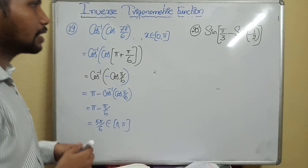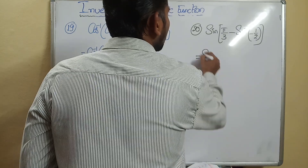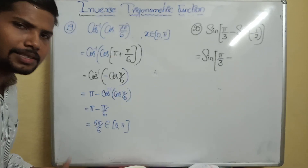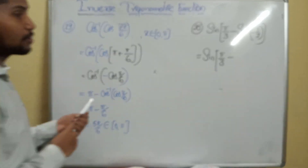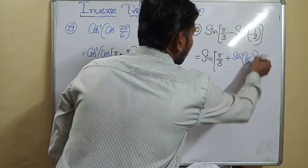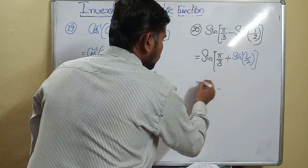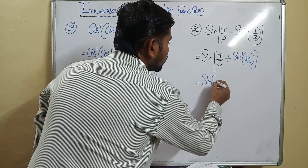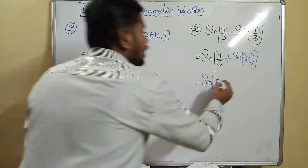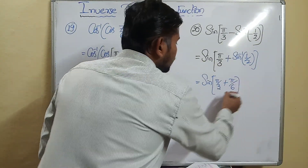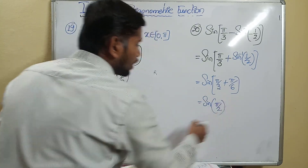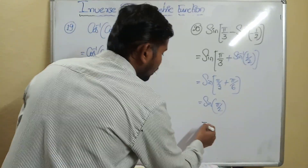Finally: sine of (π/3 − sine inverse of −1/2). Using the property sine inverse of −x = −sine inverse of x, this becomes sine of (π/3 + sine inverse of 1/2). Sine is 1/2 for π/6. So it is sine of (π/3 + π/6) = sine of (2π/6 + π/6) = sine of (3π/6) = sine(π/2) = 1.